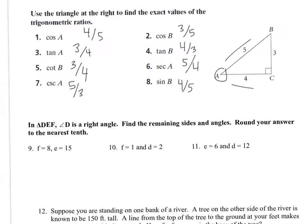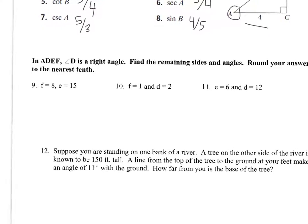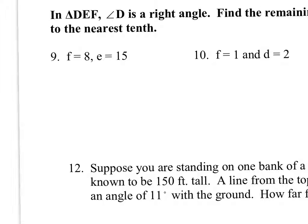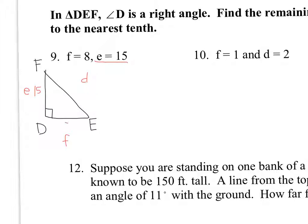In triangle DEF, angle D is a right angle. Find the remaining sides and angles to the nearest tenth. Draw a right triangle DEF where D is the right angle. The lowercase letter always goes opposite the corresponding angle, so lowercase e, f, and d label the sides. Side e is 15 and side f is 8.